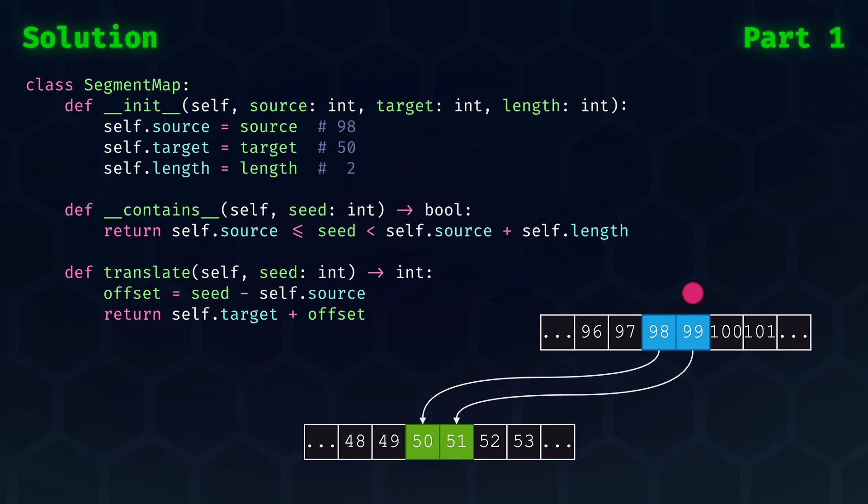The translate function allows us to take a position and map it from source to target range, so from seed to soil in this instance. All we need here is the number of the seed and compare it to the start of the source range. Then add this offset to the target range start.